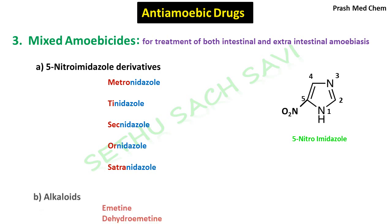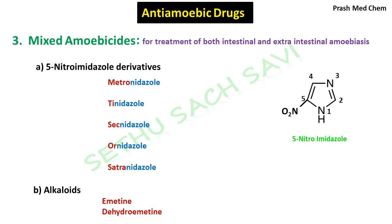Also, some of the basic naturally occurring organic substances containing at least one nitrogen atom, commonly called as alkaloids, also possess anti-amoebic action. Emetine and dehydroemetine are two important alkaloids having mixed amoebicidal action.